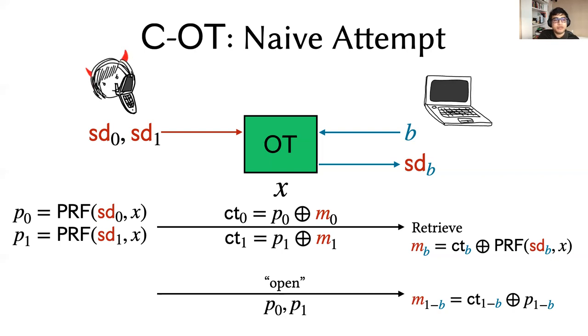To see what goes wrong, let's see what happens when the sender is corrupt. Let's fix a concrete bit for the receiver, let's say 0. Now, the sender can simply change its claimed pad P1 in the open phase to some P star, which then tricks the receiver into thinking that the message that it couldn't decrypt earlier was instead some M1 star. This error propagates upwards in the ZKGC protocol.